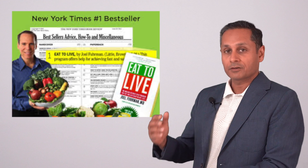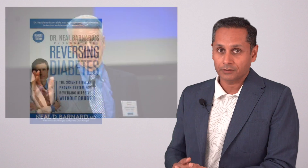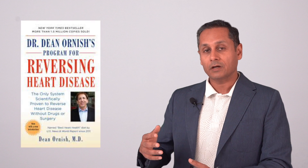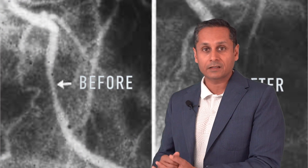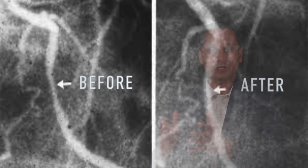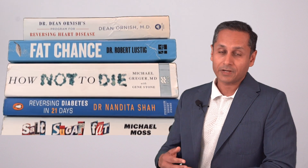Diabetes reversal is a pretty established field. It's been going on for over 20 years. There are many famous doctors in the field, such as Dr. Fuhrman, Dr. Esselstyn, Dr. Neil Bernard, Dr. Hyman, and many more — including Dr. Dean Ornish, who worked with President Bill Clinton and reversed his cardiac disease. There are photographs in his presentations where he shows arteries being healed. These are just a few of the books I have read, and I have worked with Dr. Fuhrman closely in bringing diabetes reversal to patients in India.